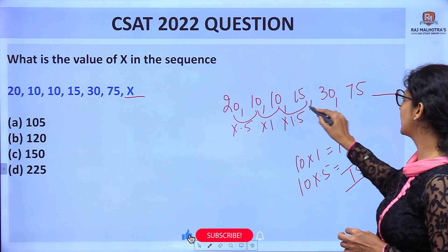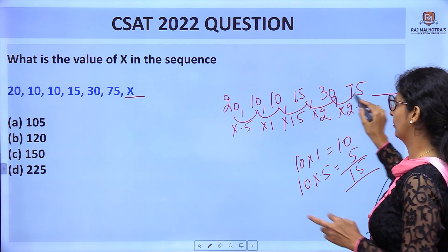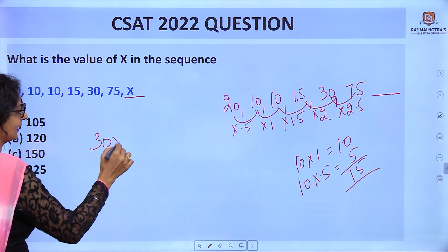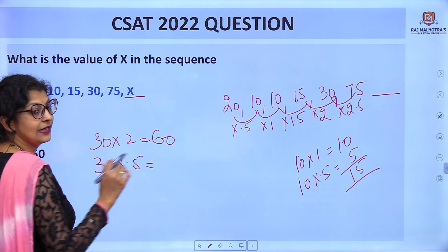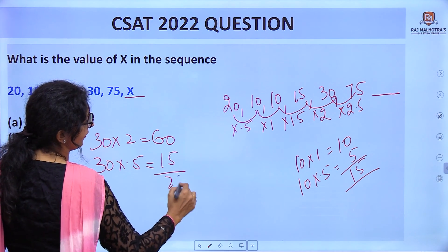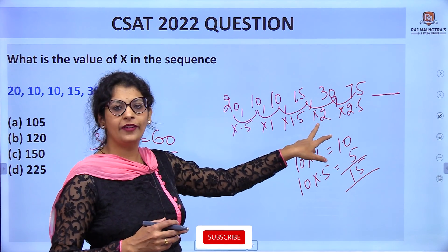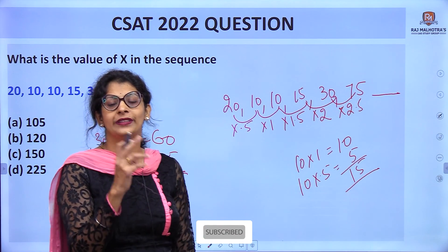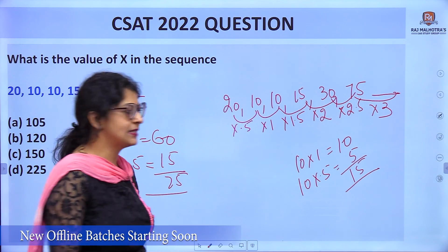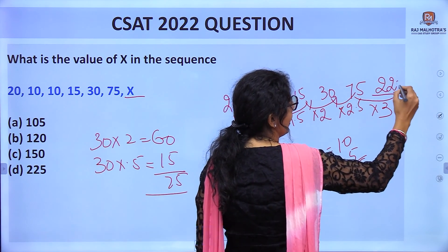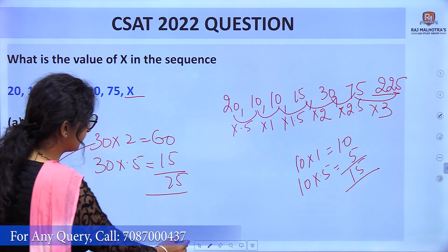Next is 15 × 2 = 30. Then 30 × 2.5: 30 × 2 = 60, 30 × 0.5 = 15, total is 75. The pattern is 0.5, 1, 1.5, 2, 2.5, so next is multiplied by 3. 75 × 3 = 225. The answer is option D.